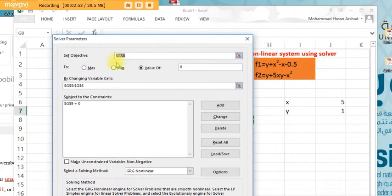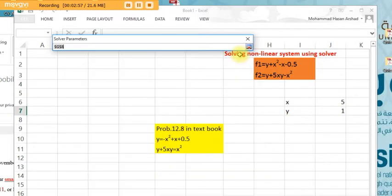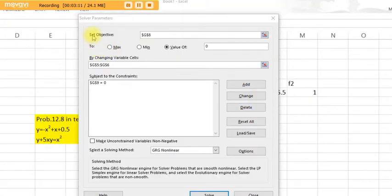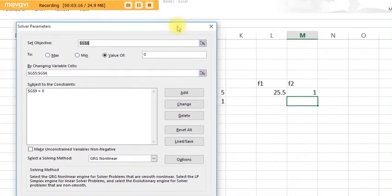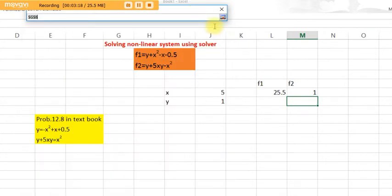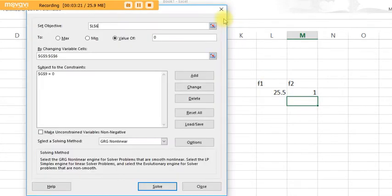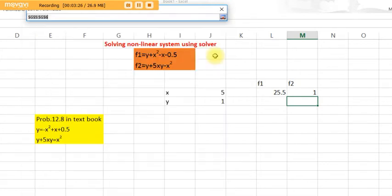Now for the set objective, we have two objectives, f1 and f2. We select f1 as the set objective. Value of zero, by changing x and y.